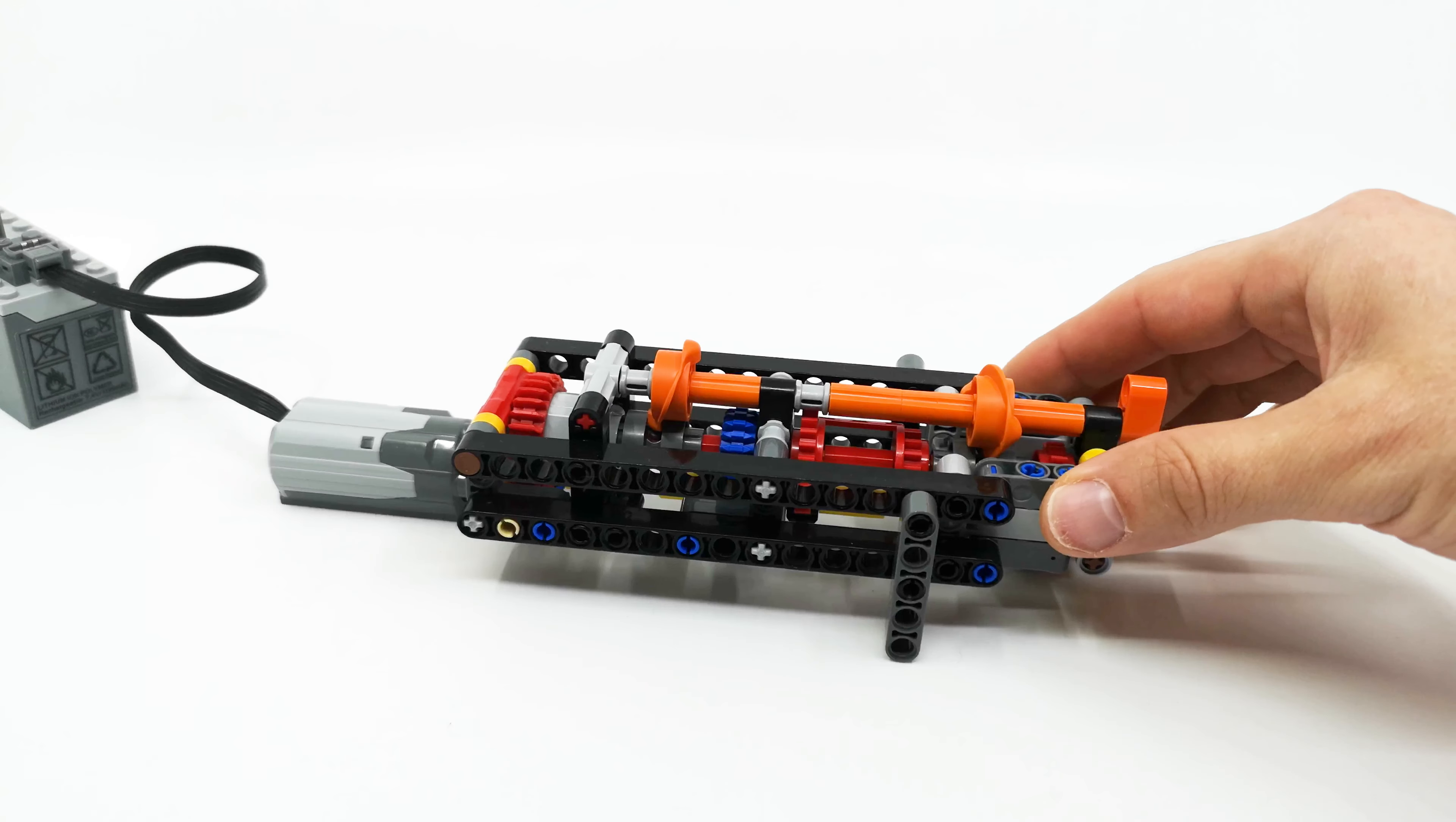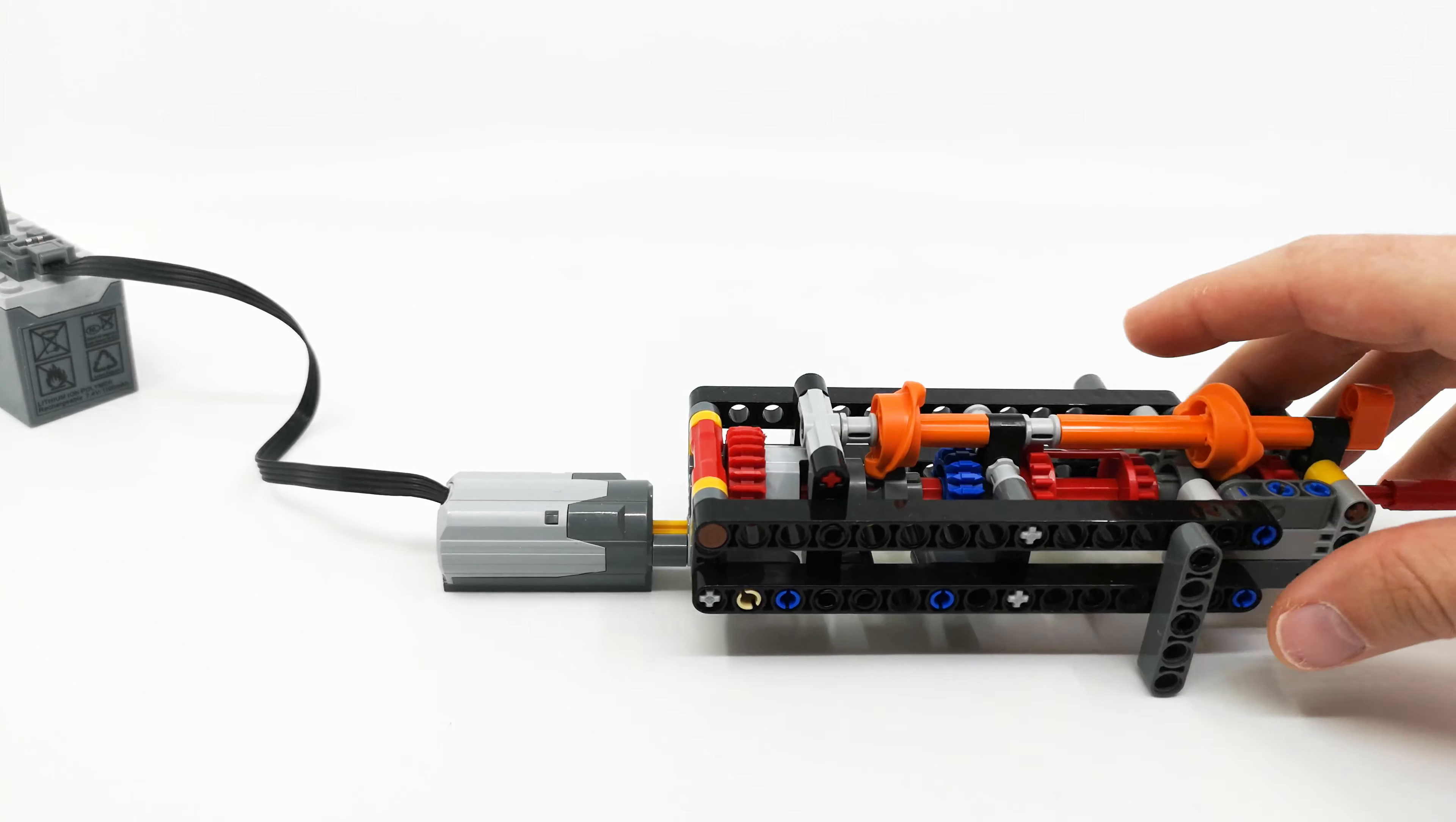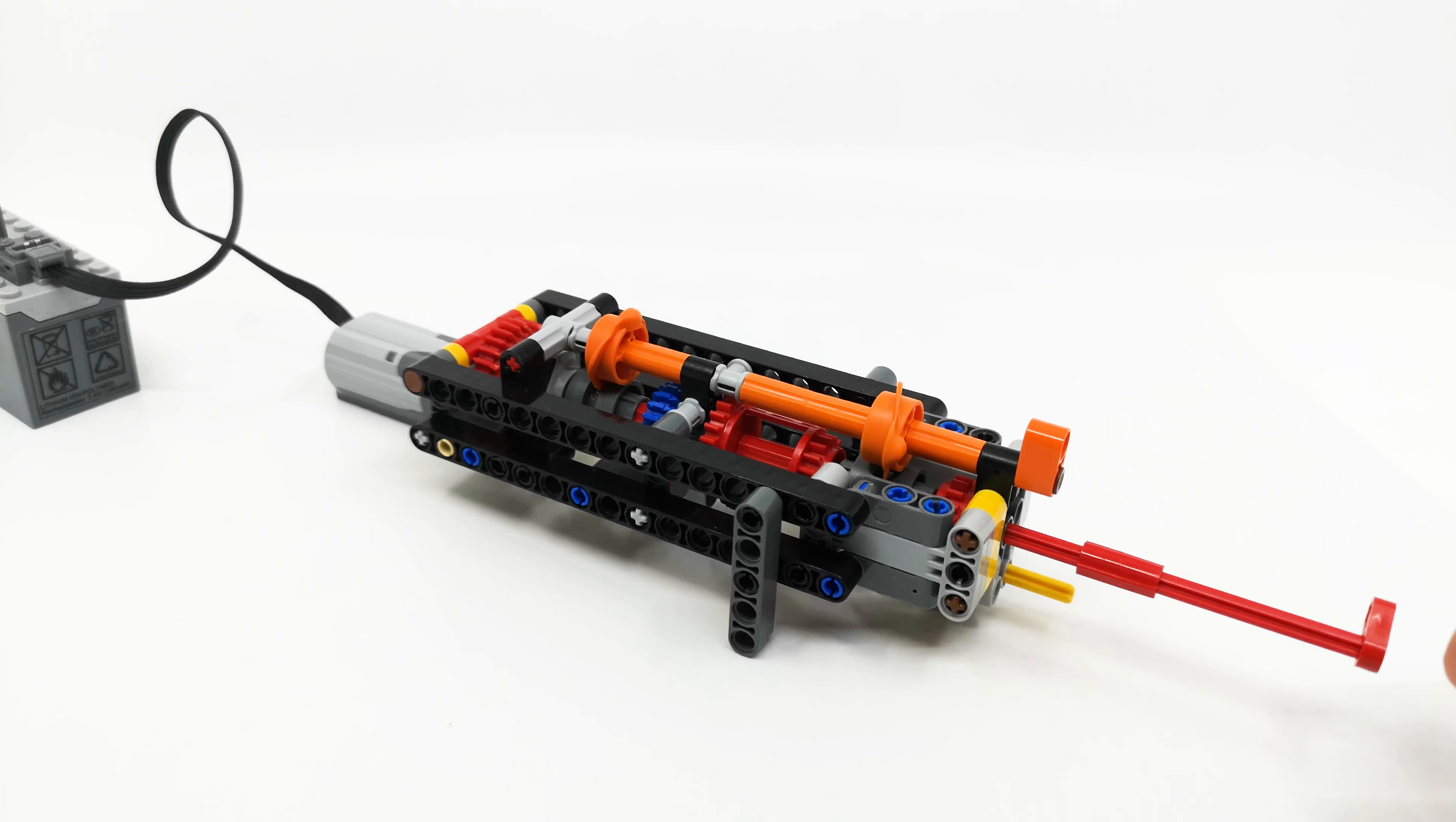So basically this gearbox uses the new differential casing as 28-tooth clutch gear. First I'm going to show you how it works and then we're going to go into the details.